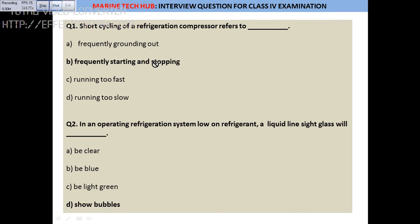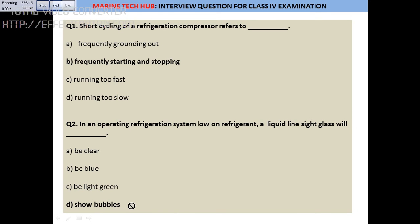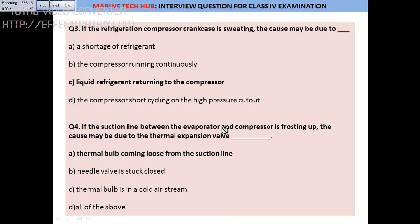Question 2: In an operating refrigerant system with low refrigerant, what will we see in the sight glass? You will see bubbles coming. If there are bubbles in the sight glass, that means the refrigerant liquid level is low. This can be observed during inspection — if you see bubbles, you need to charge the system, as there is likely a leakage.